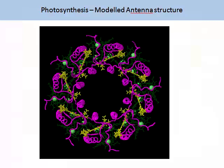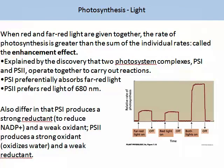This is another model of one antenna structure, shown to illustrate the complexities of the molecules that make up these centres. Photosynthesis has some interesting characteristics. When red and far-red light are given together, the rate of photosynthesis is greater than the sum of the individual rates — this is called the enhancement effect. It is explained by the discovery that there are two photosystem complexes, photosystem I and photosystem II, and that they operate together. Photosystem I prefers the absorption of far-red light, while photosystem II prefers the absorption of red light at 680 nanometres.